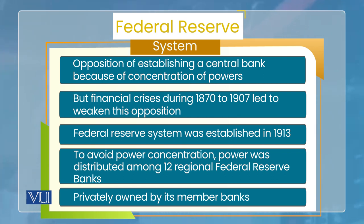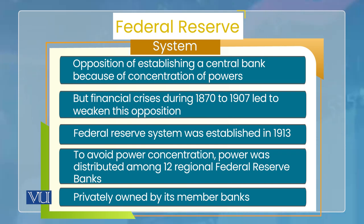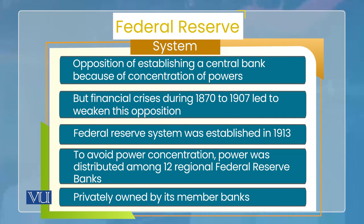لیکن 1870 سے لے کر 1907 تک financial crises آئے US کے اندر، جس کی وجہ سے central bank بنانے کا فیصلہ ہوا۔ 1913 میں Federal Reserve System بن گیا۔ چونکہ primary opposition یہ تھی کہ کہیں concentration of power نہ ہو جائے، اس لیے Federal Reserve کا design یہ کیا گیا کہ اس کے اندر 12 regional Federal Reserve Banks ہیں اور powers ان کے اندر distribute کر دی گئیں۔ یہ Federal Reserve privately owned ہے by its member banks۔